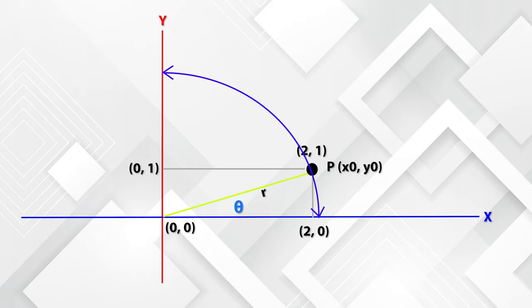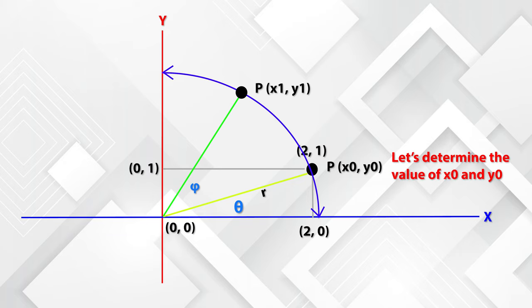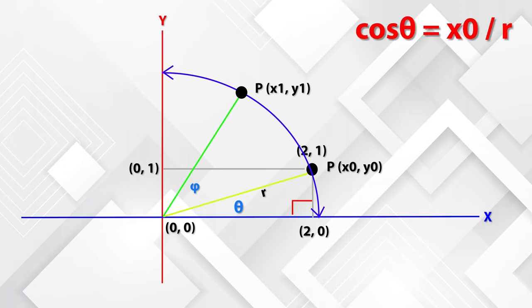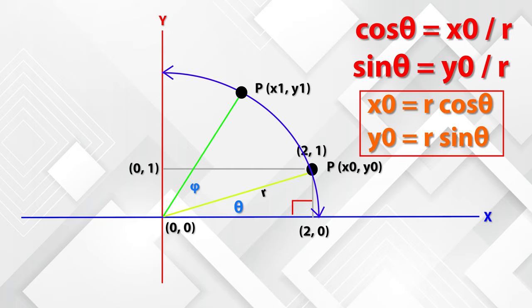Now, let's take this point and rotate anticlockwise to another sub-angle called phi. Let's consider the new point is x1, y1. R is the distance from the origin. Now, our goal is to determine the new point based on the sub-angle and the previous point. To do that, let's first identify the value of x0, y0 in terms of theta and radius R. Let's create a right-angle triangle from the point x0, y0. That means cos theta is equal to x0 by R and sin theta is equal to y0 by R. This implies x0 is equal to R cos theta and y0 is equal to R sin theta. So, we got the values of x0 and y0 in terms of radius and angle.